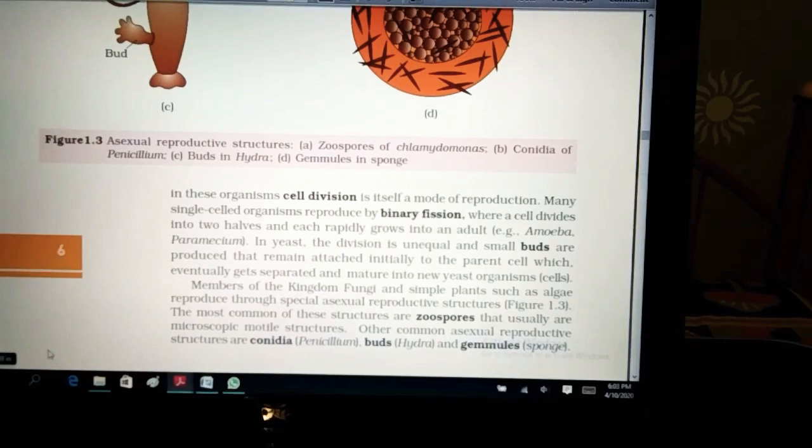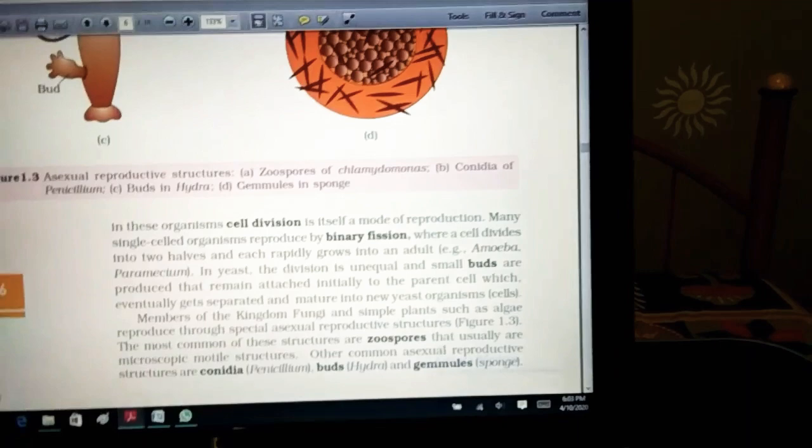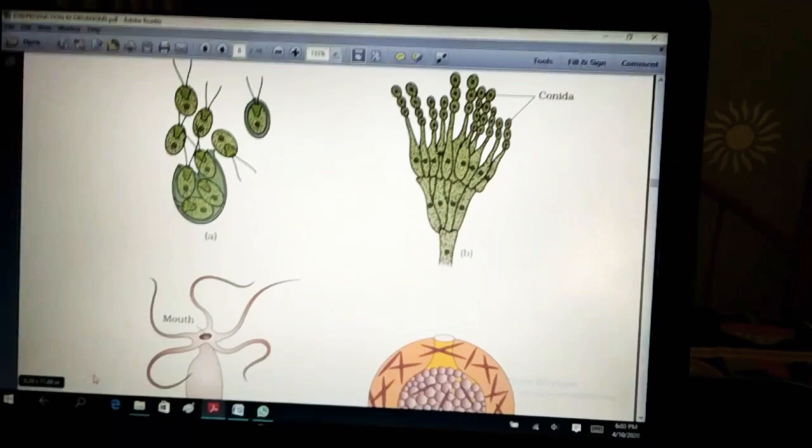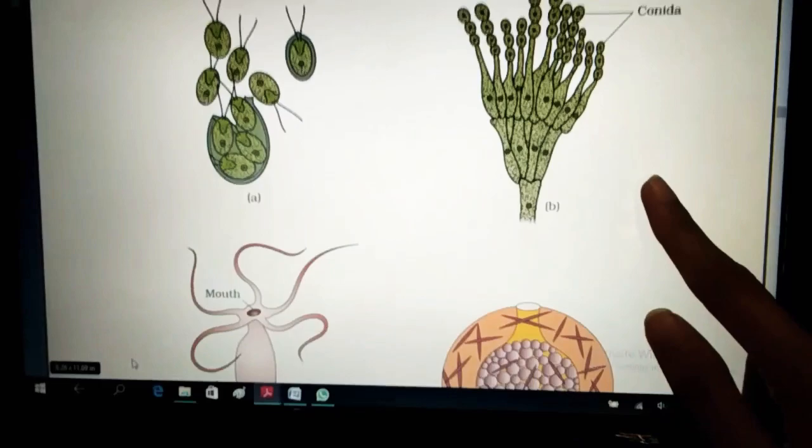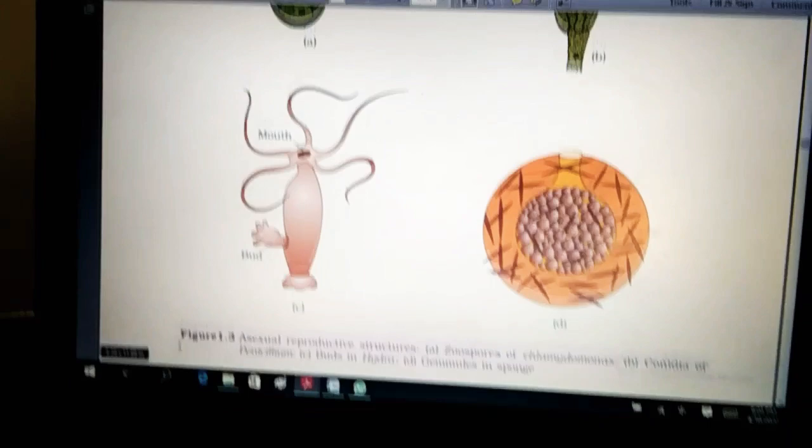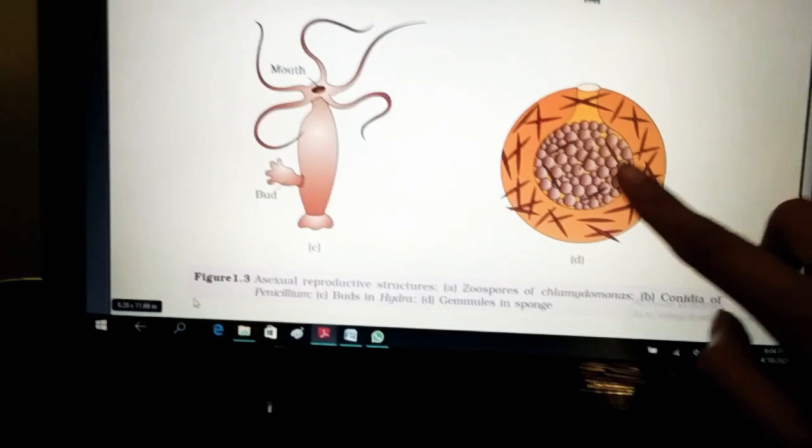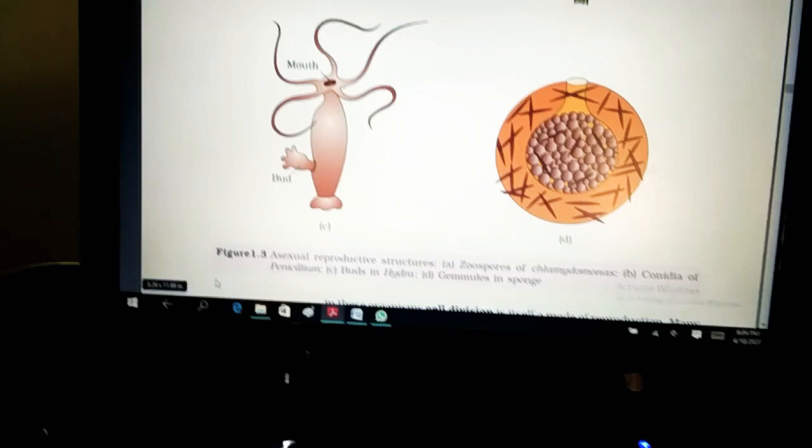Here next is other common asexual means are conidia seen in penicillium and buds seen in hydra and gemules that are seen in sponges. Conidia seen in penicillium. You need to know all these because your teachers can ask you or maybe in the board, you may be asked what is the kind of reproduction going on and what organisms are involved in such a reproduction. And here, the buds are seen in, I showed you in hydra. And gemules in sponges. Here, the entire figure, these are the gemules in the sponges and this is an important figure. This has come in sometimes exams. So, you need to know it.